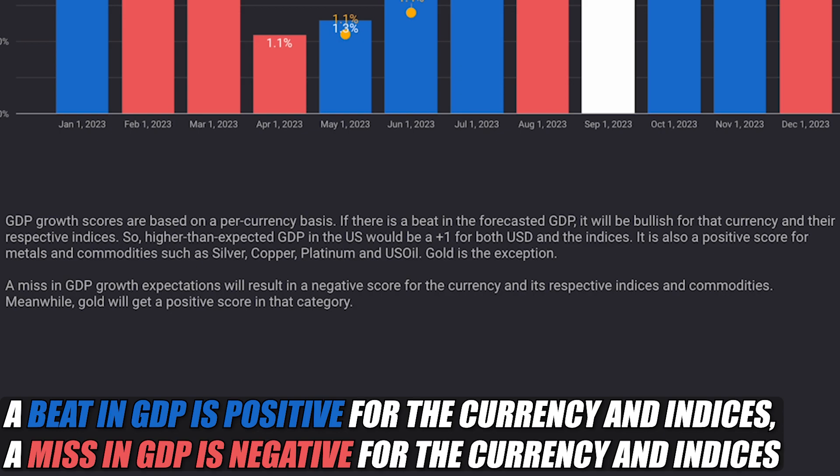So higher than expected GDP in the US would be a plus one for both USD and the indices. It is also a positive score for metals and commodities such as silver, copper, platinum, and US oil.